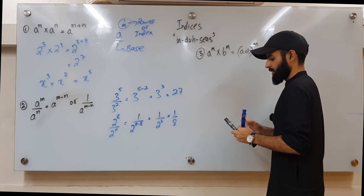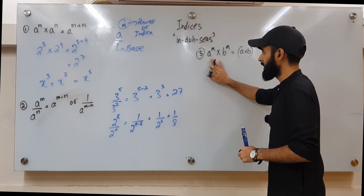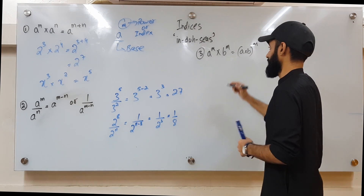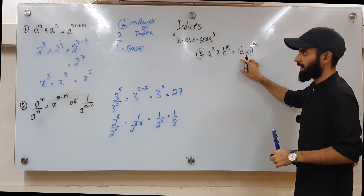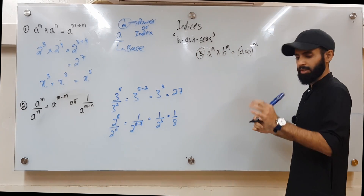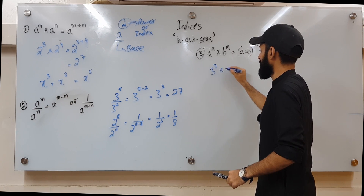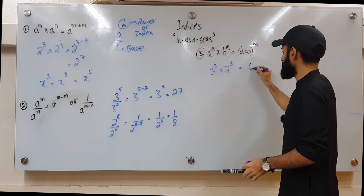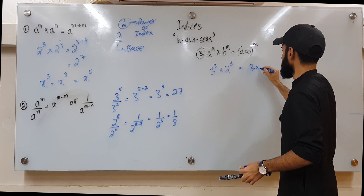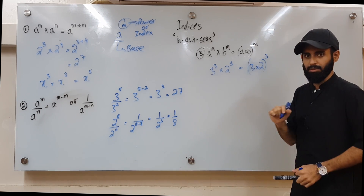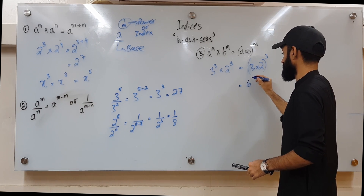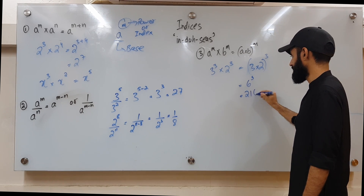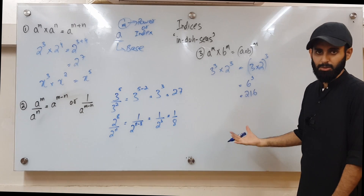Rule number three: if you have the same powers but different bases that are being multiplied together, you simply multiply the bases and raise them to the common power. For example, 3 cubed times 2 cubed — since the powers are the same, multiply 3 by 2 to get 6, then raise it to the power of 3, giving 6 to the power 3. This rule can be used to make evaluation easier when asked.